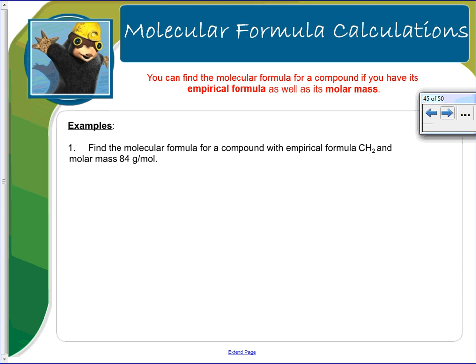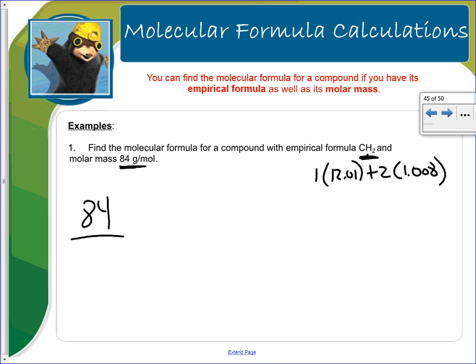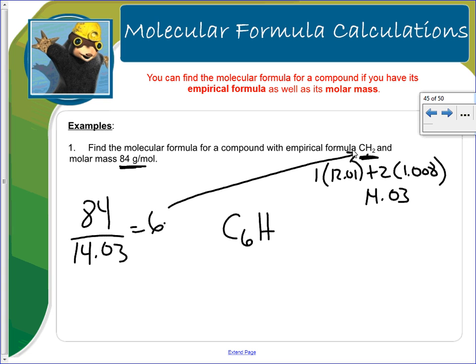Find the molecular formula for a compound with empirical formula CH2 and a molar mass of 84 g/mol. Calculate the molar mass of CH2: one carbon plus two hydrogen gives 14.03 g/mol. Divide 84 by 14.03 to get 6. Multiply the subscripts by 6: C becomes 6 and H becomes 12. The molecular formula is C6H12.